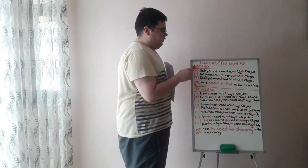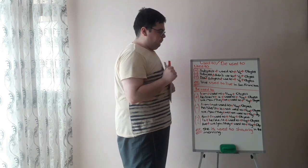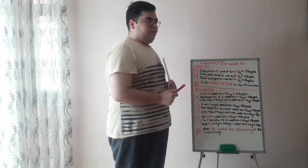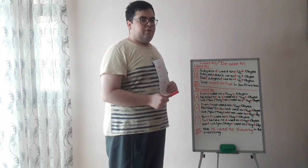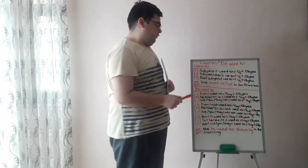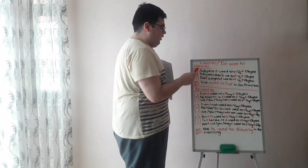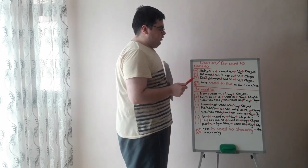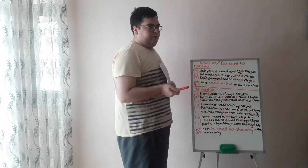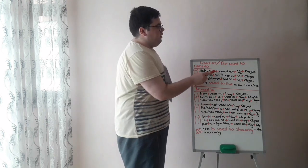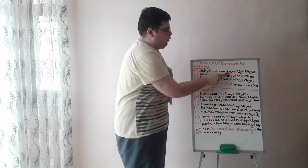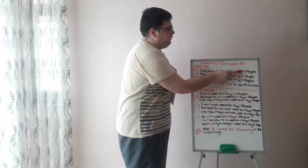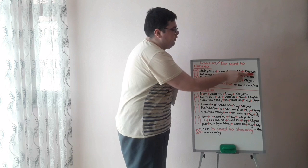First of all, we will learn used to. If you want to create a positive sentence structure using used to, first we will put subject — I, you, he, she, it, we, you, or they — plus used to, plus verb one, plus an object.